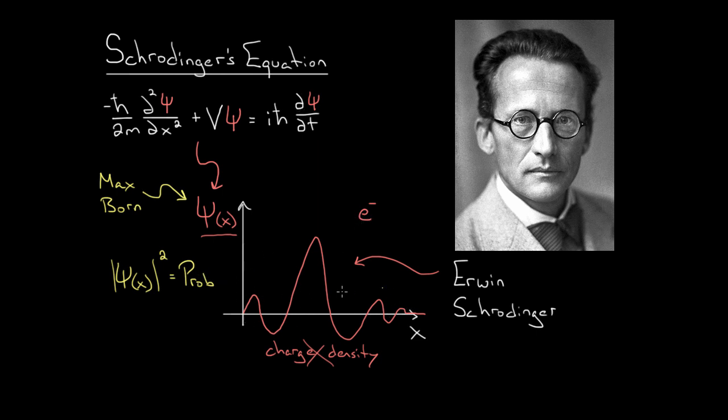So if this was our wave function, Max Born would tell us that points where it's zero, these points right here where the value is zero, there is a zero percent chance you're going to find the electron there.